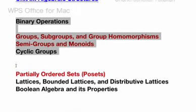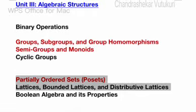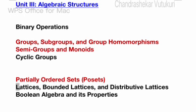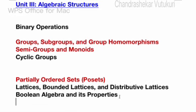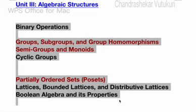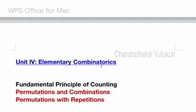Partial order sets are set as a topmost question which may occur in the long question. Lattices, bounded lattices, and distributive lattices are set for short and long questions. Boolean algebra properties may be the short question this time. From all these concepts you are going to get short as well as long questions. If you're looking for a pre-final examination question paper pattern, I am going to upload that for you as well, dear students.